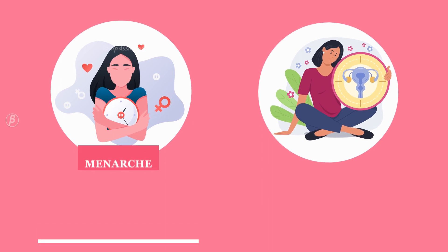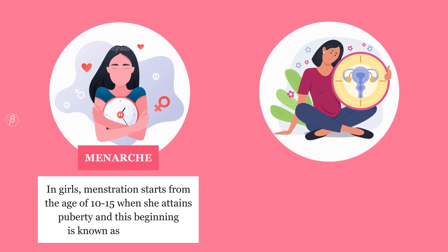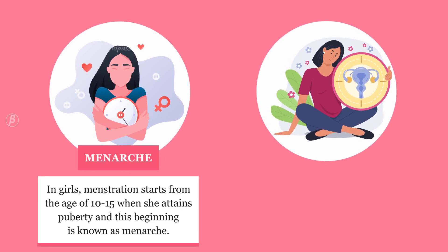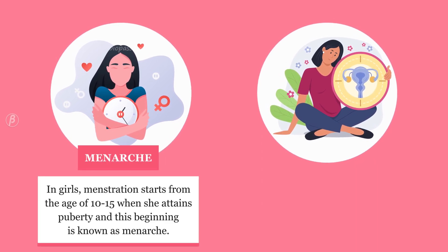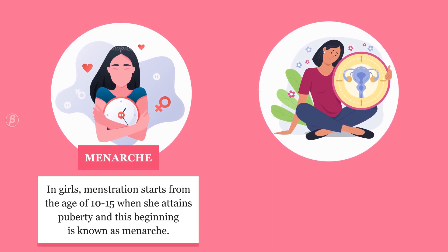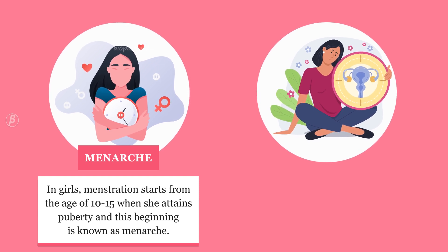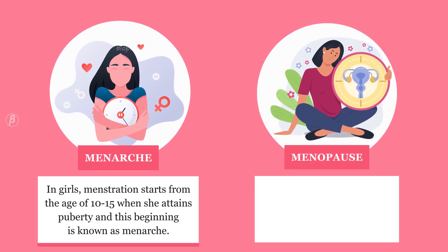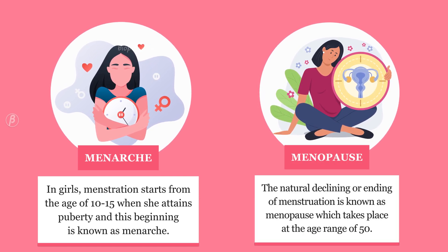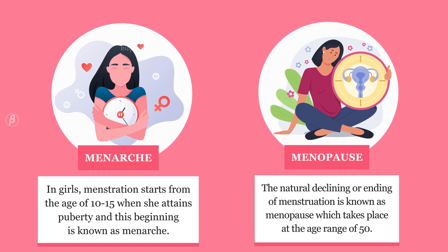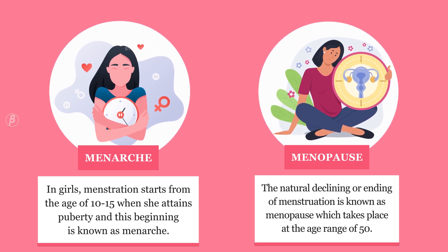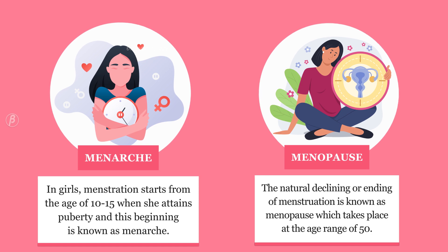In girls, menstruation starts from the age of 10 to 15 when she attains puberty, and this beginning is known as menarche. The natural declining or ending of menstruation is known as menopause, which takes place at the age range of 50.